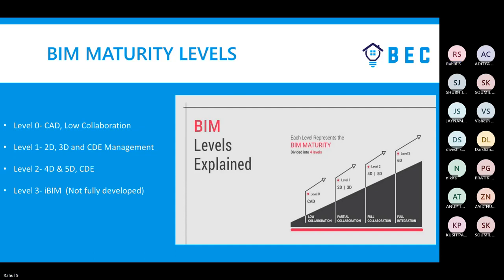At the advanced BIM levels — 6D, 7D, and beyond — it becomes full integration. Here we are integrating building performance analysis, cost data, facility management, BMS, AI, and digital twins with the existing BIM model. Keep in mind how maturity levels relate to dimensions and how integration works at each stage.